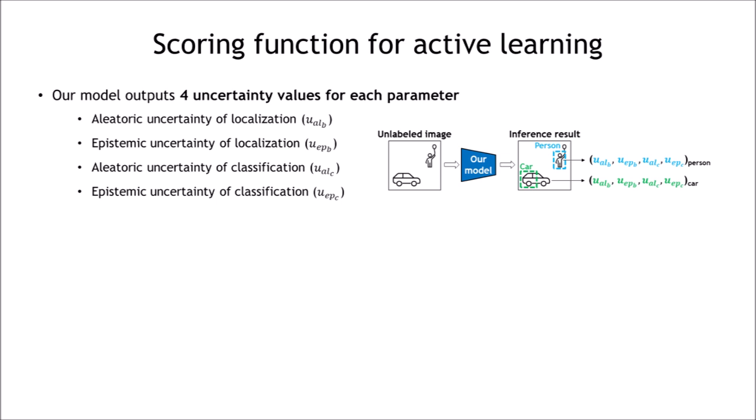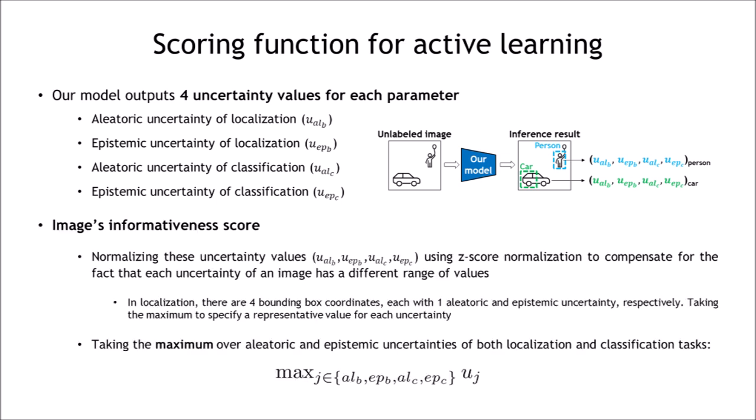We leverage these four uncertainties in the scoring function for active learning. For averaging these values, we first normalize these four values using z-score normalization to compensate for the fact that each uncertainty of an image has a different range of values.